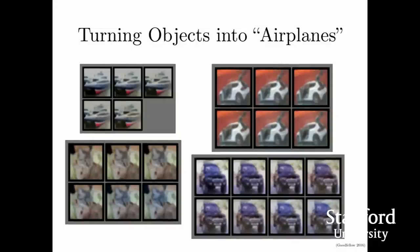When my colleague Christian first discovered this phenomenon, he found it was actually a result of a visualization he was trying to make—he wasn't studying security or how to fool a neural network. Instead, he had a convolutional network that could recognize objects very well and wanted to understand how it worked. He thought that maybe he could take an image of a scene, like a picture of a ship, and gradually transform it into something the network would recognize as an airplane. Over that transformation, he could see how the features change—perhaps the background would turn blue or the ship would grow wings.